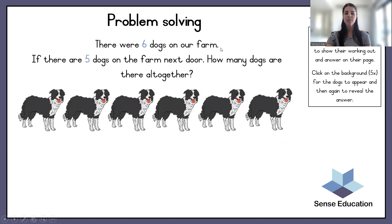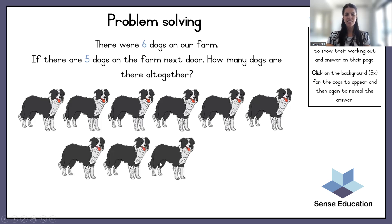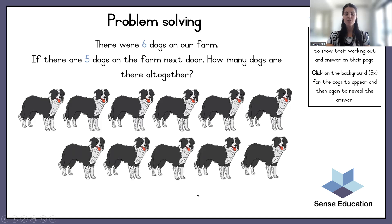There were six dogs on our farm. If there are five dogs on the farm next door, how many dogs are there altogether? There are the six dogs, plus the five dogs on the farm next door — and altogether there are eleven dogs.